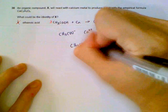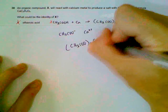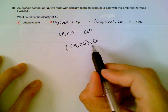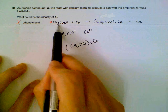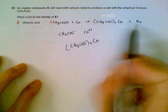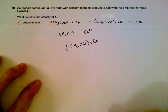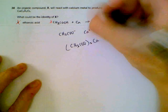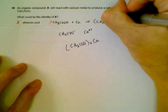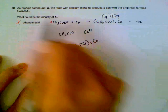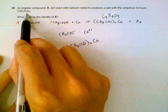The formula for the calcium ethanoate salt requires 2 moles of ethanoic acid, giving us this salt and hydrogen gas. Checking the empirical formula: C2 times 2 gives C4, H6, O4 — that's C4H6O4.